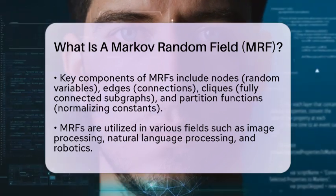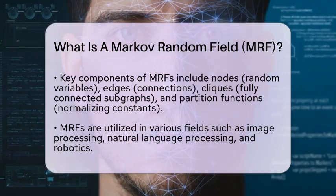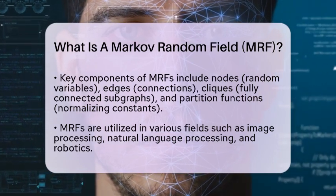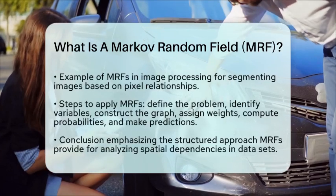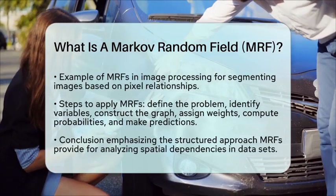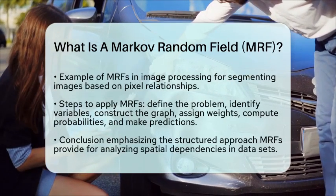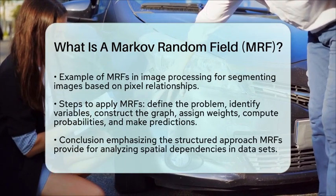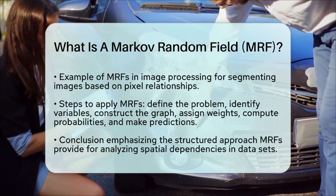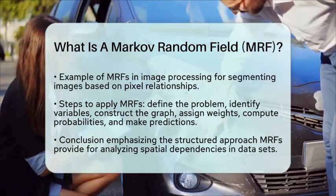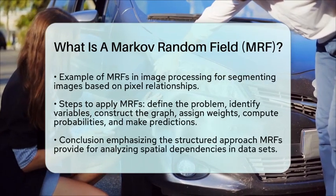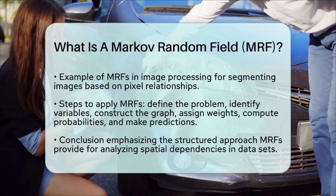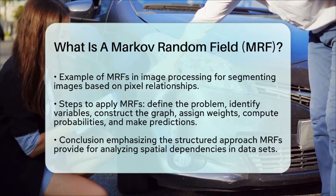To practically apply MRFs, you would start by defining the problem and identifying the variables involved. Next, you would construct the graph to represent the relationships between these variables. After that, you would assign weights to show the strength of these relationships. Then, you would compute probabilities using methods like Markov chain Monte Carlo. Finally, you would use these probabilities to make predictions about outcomes.